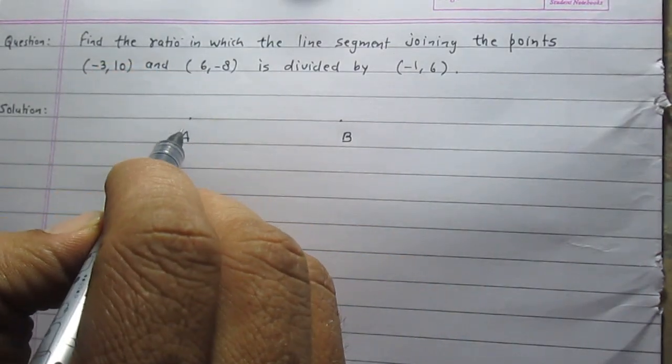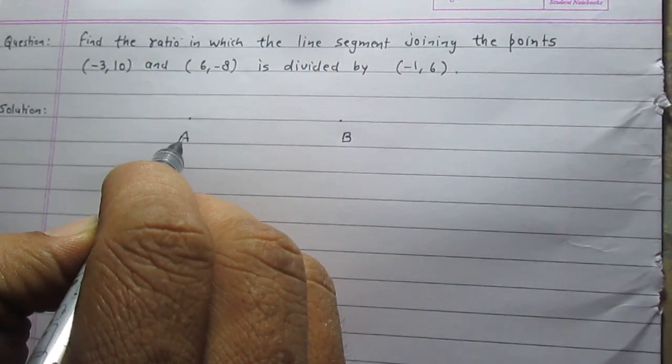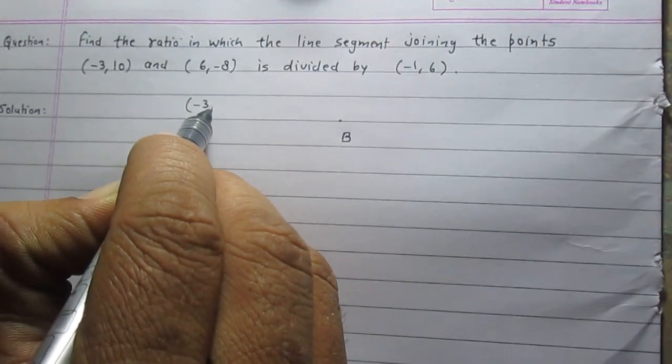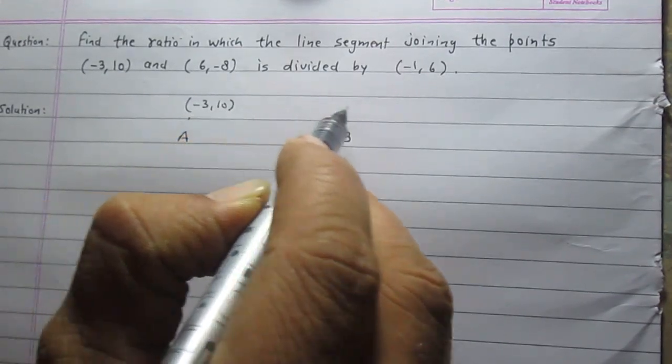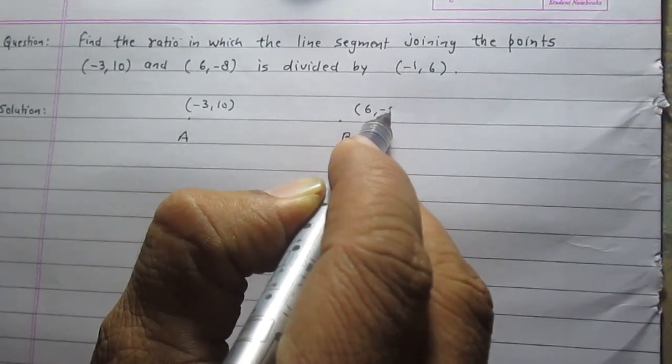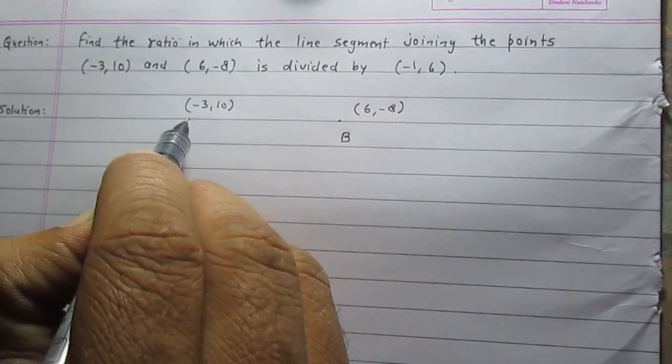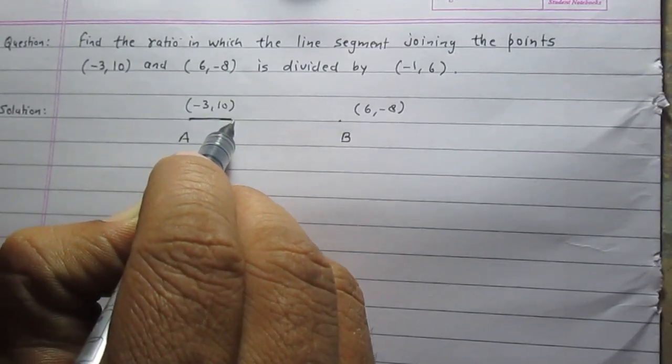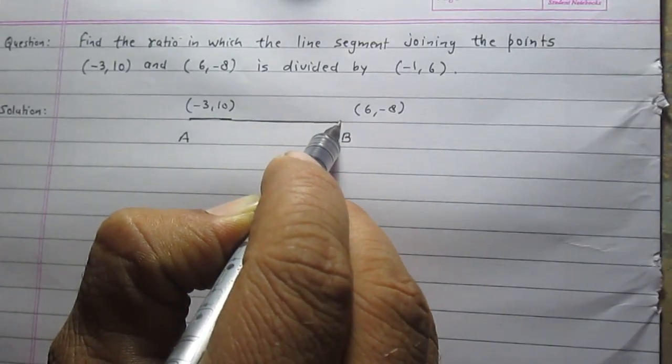Let us consider the coordinates of point A are (-3, 10) and coordinates of point B are (6, -8). They are the endpoints of line segment AB.